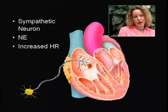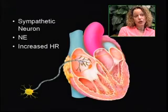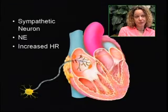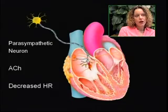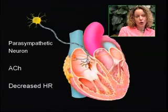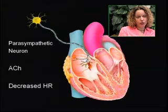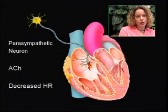The sympathetic neuron increases our heart rate through the hormone norepinephrine, stimulating the heart to fire at the SA node. The parasympathetic neuron uses acetylcholine as its chemical, which decreases the heart rate by signaling the SA node to not fire as frequently.